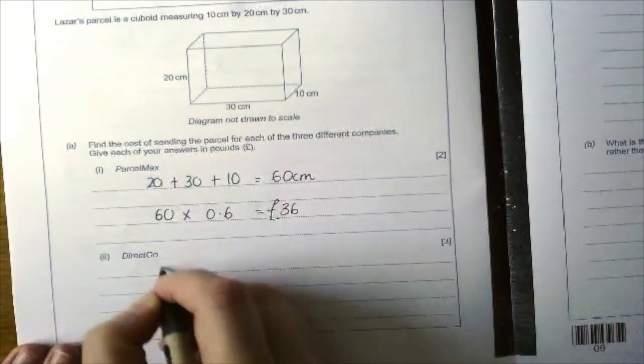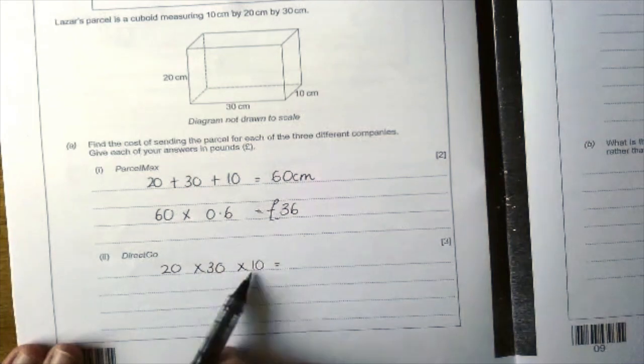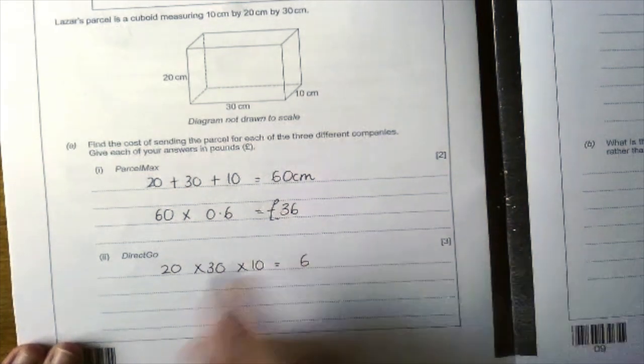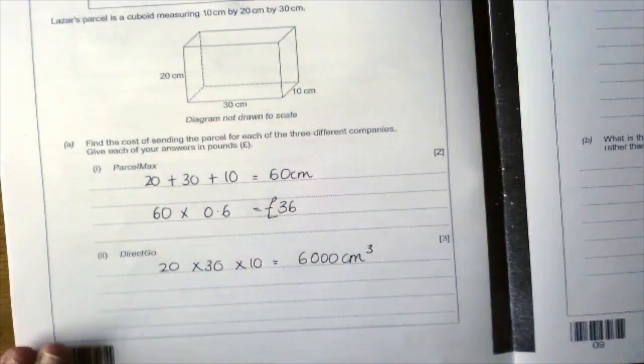So the volume is 20 times 30 times 10. So 2 times 3 is 6 times 1 is still 6, and then I can add on my 3 zeros. So 6000 centimeters cubed.